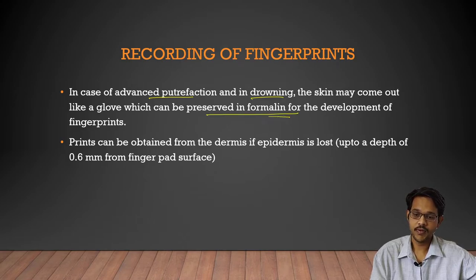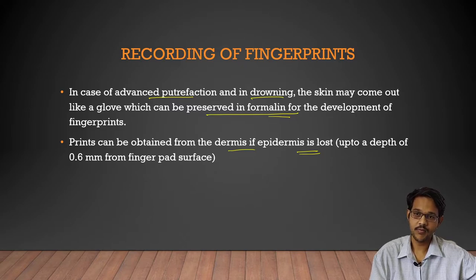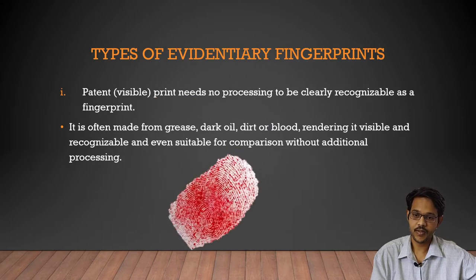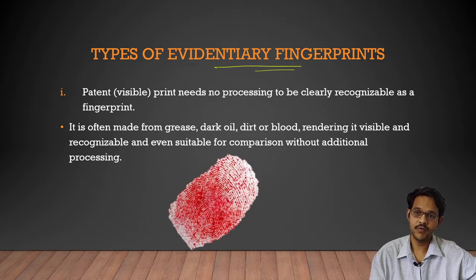If the epidermis is lost, fingerprints can still be obtained from the dermis up to a depth of 0.6 mm of the finger pad surfaces. If prints are decipherable, the palmar skin of the terminal phalanx of each finger can be incised, preserved in formalin, and sent to a forensic laboratory for identification. Now coming to types of evidential fingerprints found at a crime scene.